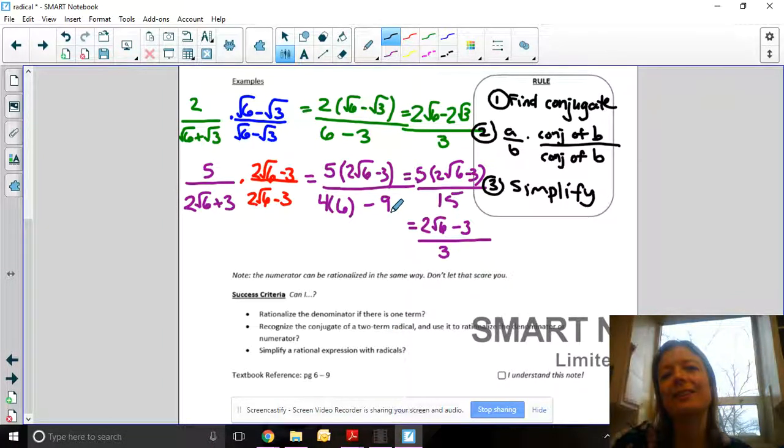Can I rationalize the denominator of one term? Recognize the conjugate of a two-term radical and use it to rationalize the denominator or numerator? And simplify a rational expression that has radicals in it? That's our algebra lesson to get us ready for limits. Practice that a lot so you know how to use it. Thanks for watching.